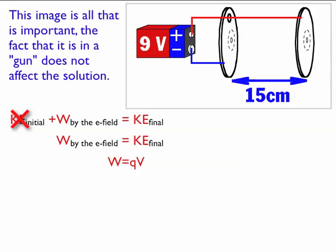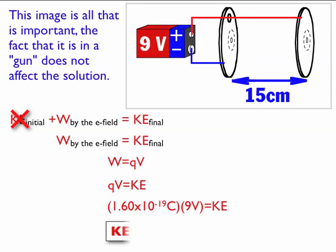That being said, work is equal to Q times V, so QV is equal to kinetic energy. In other words, the charge of an electron, which I can look up or find in the electrostatics constant sheet that I gave out in class, is equal to 1.6 times 10 to the negative 19 Coulombs, times 9 volts, because that's the voltage between the two plates that's on the battery. And that's the kinetic energy. So the kinetic energy is 1.44 times 10 to the negative 18 joules.